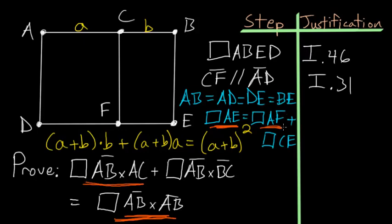So that is for rectangle AF. And then rectangle CE, this is formed from the lines BC and BE. But we know that BE is equal to AB, so BE and AB are equal. So the rectangle on CE is just the rectangle contained by the lines AB and BC. And with that, we can finish our proof with QED.